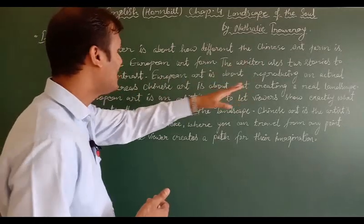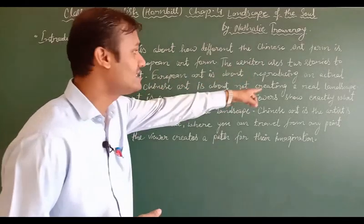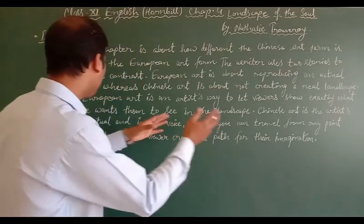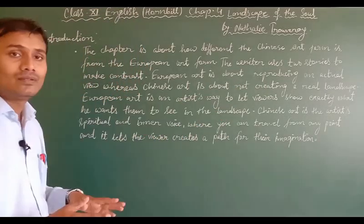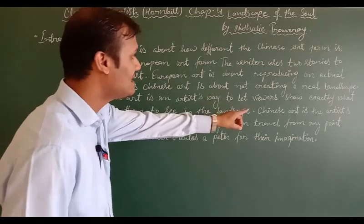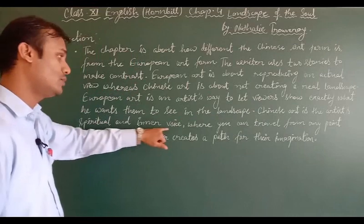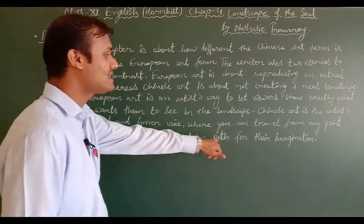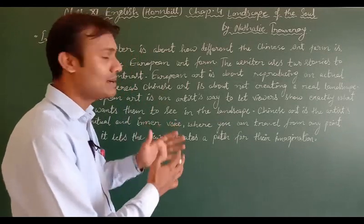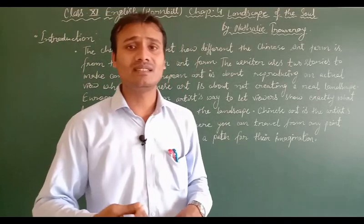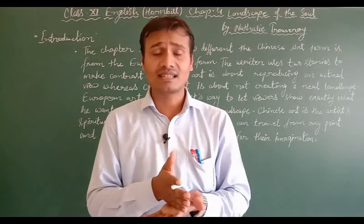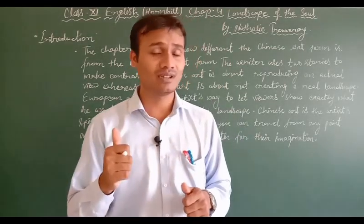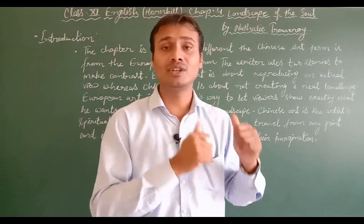European art is about reproducing an actual view, whereas Chinese art is about not creating a real landscape. European art is an artist's way to let viewers show exactly what he wants them to see in the landscape. Whereas, when we talk about Chinese art, we find that it is the artist's spiritual and inner voice, where you can travel from any point, and it lets the viewer create a path for their imagination.